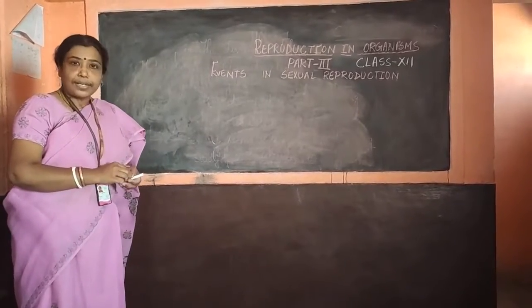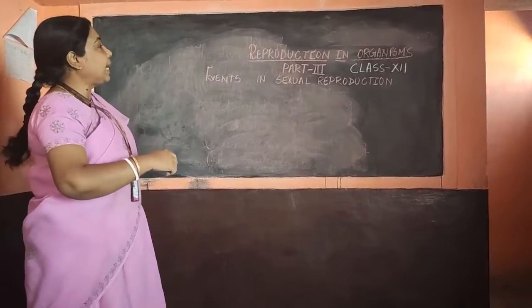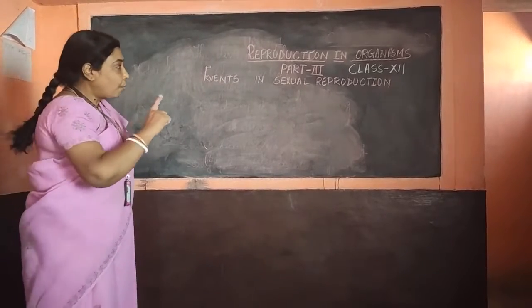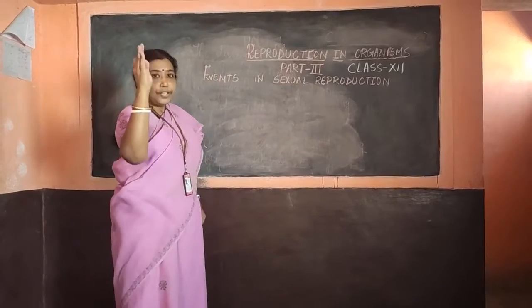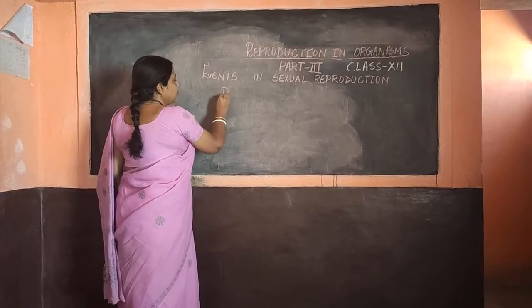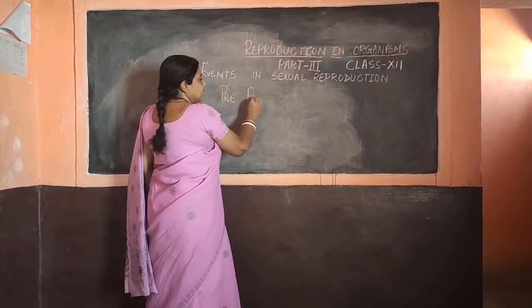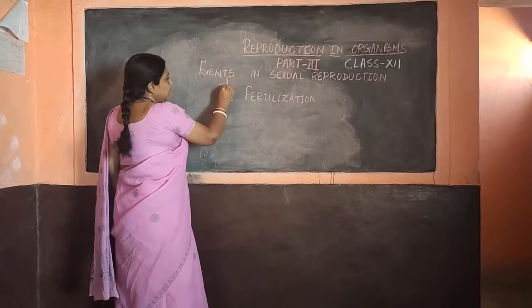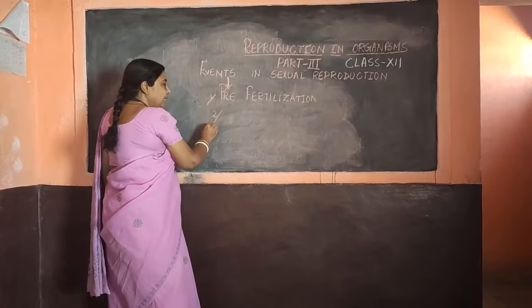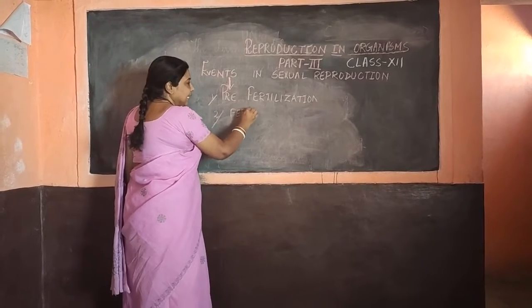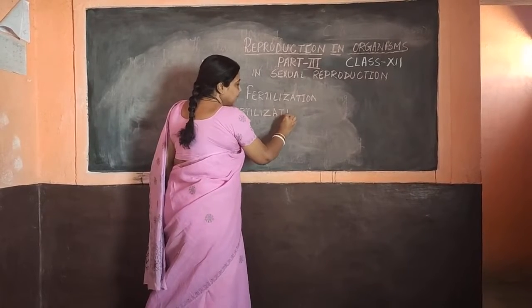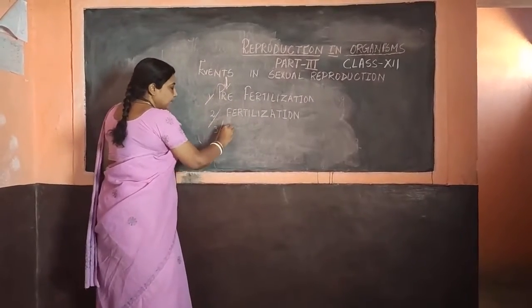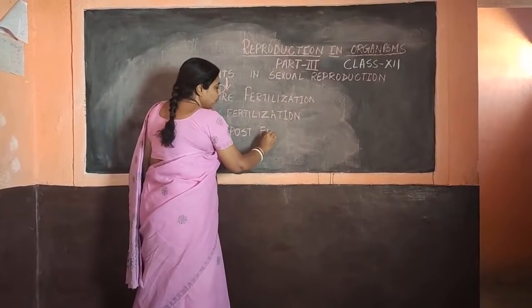In events of sexual reproduction, there are 3 events — we need to categorize them. We cannot say that reproduction is a sudden occurrence of any phenomenon. This entire event is divided into 3 phases. The first is pre-fertilization, the second is fertilization, and the third is the post-fertilization phase. All 3 phases are equally important.